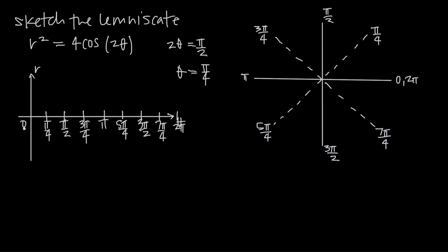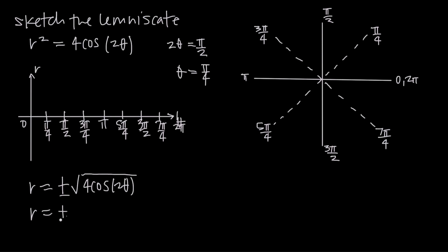We want to plug all these theta values into the equation to get r. But notice the equation is given as r squared, so we need to solve for r by taking the square root of both sides. On the left we get r, and on the right we get positive or negative square root of 4 cosine of 2 theta. Taking the square root of 4 gives 2, so r equals positive or negative 2 square root of cosine of 2 theta.